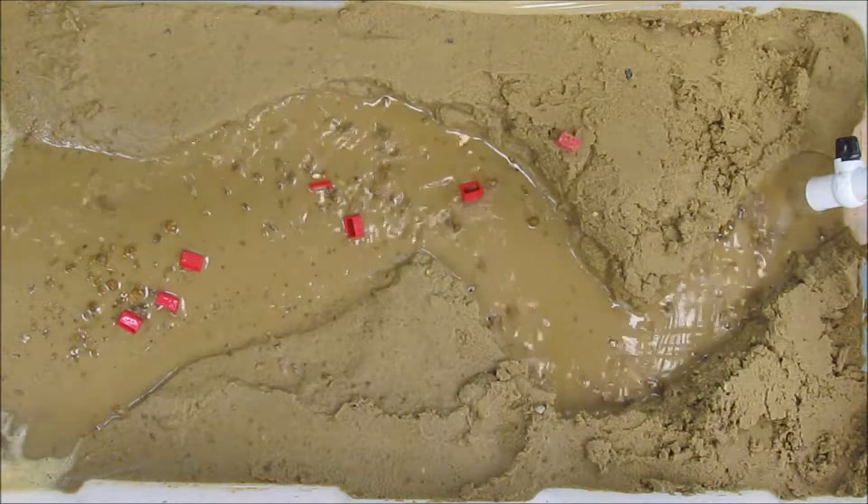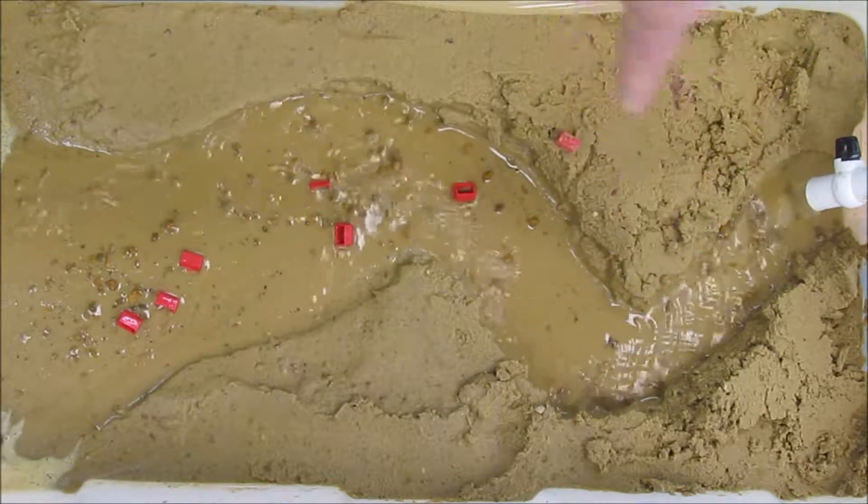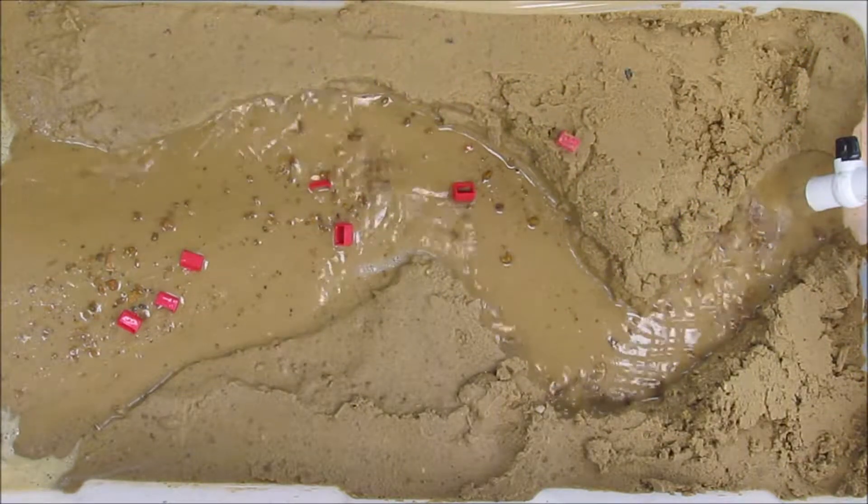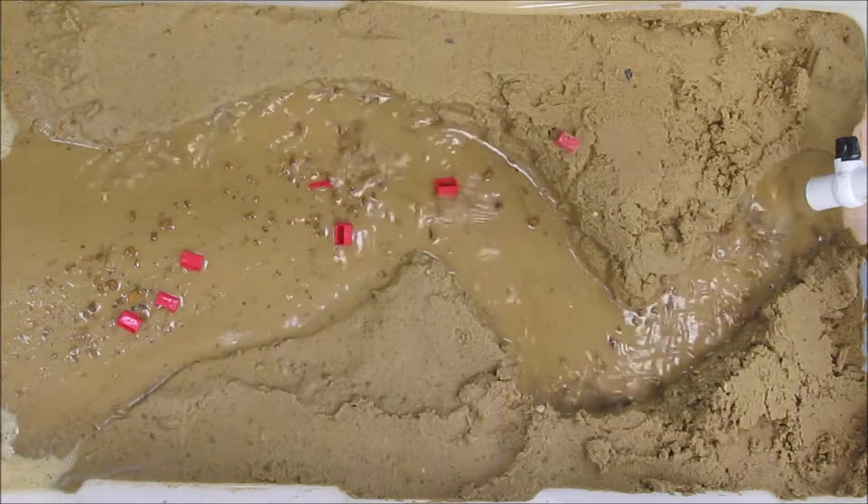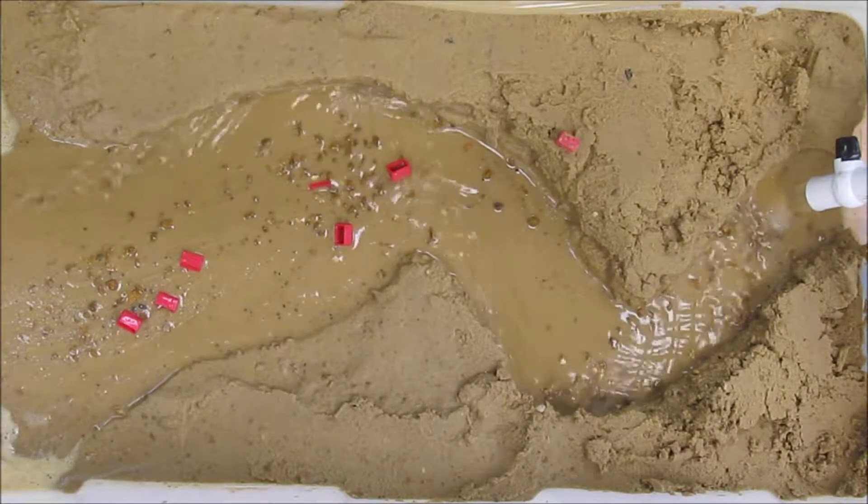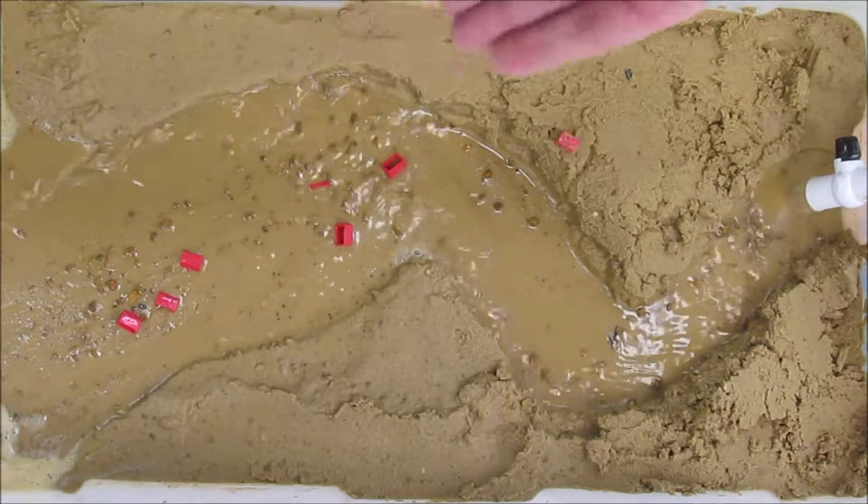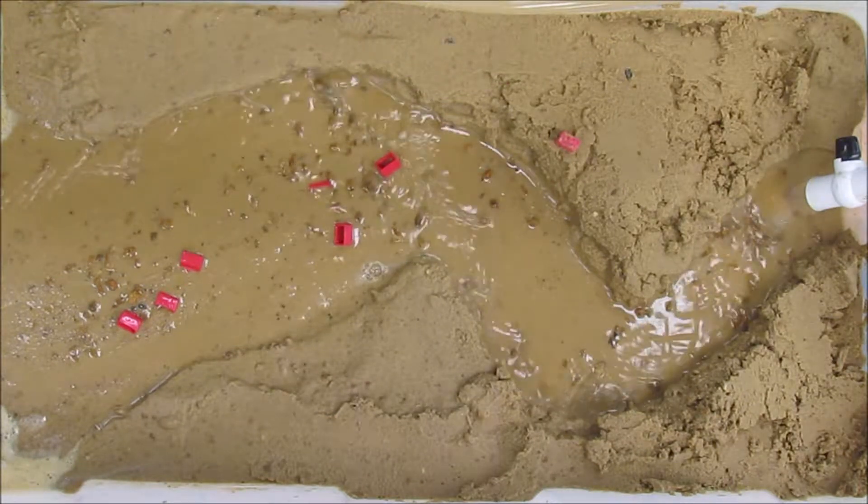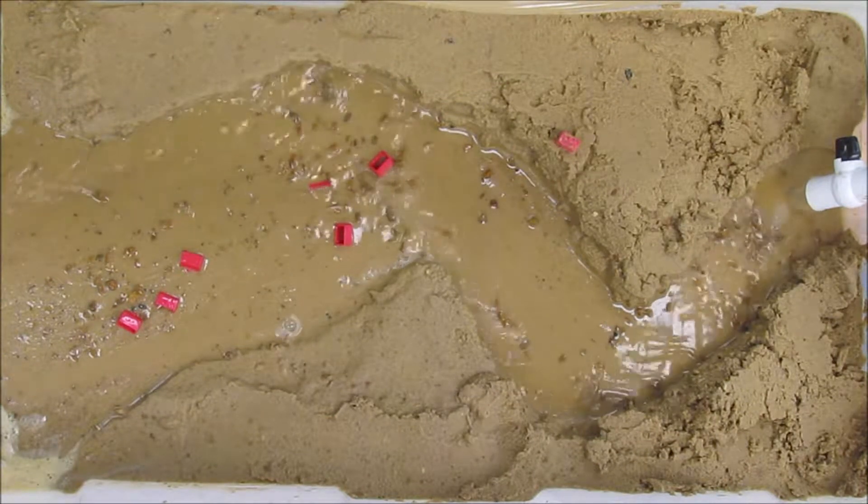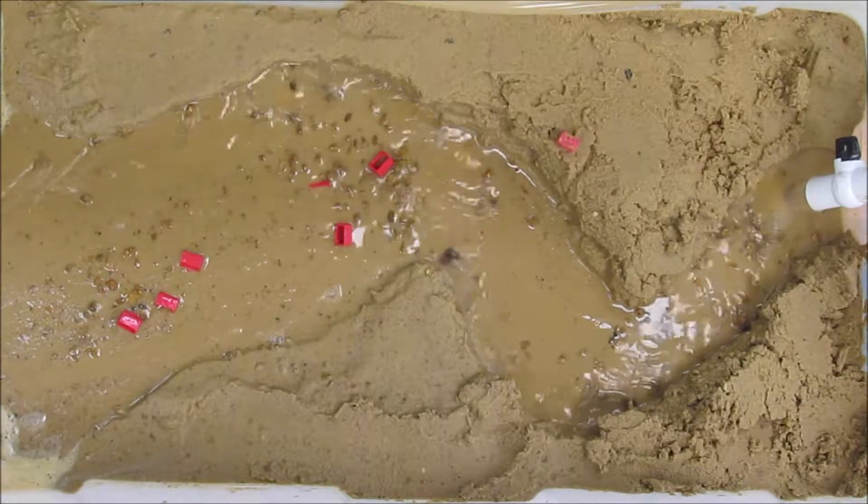So we have cut banks on the outside where water is cutting away the stream and point bars on the inside of each meander. At the end of the river forms a delta where the water slows down, it drops its sediment. It can't carry it anymore, so it is deposited at the end of a river.